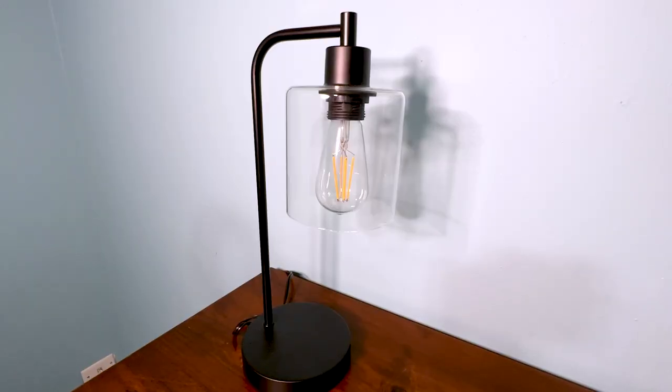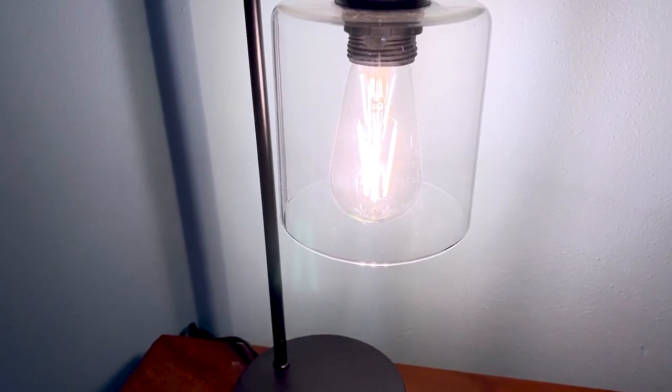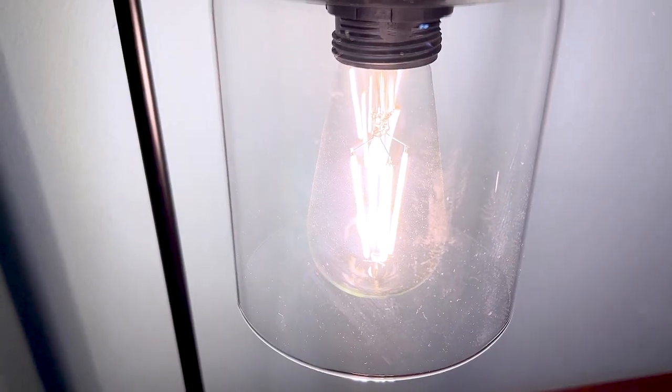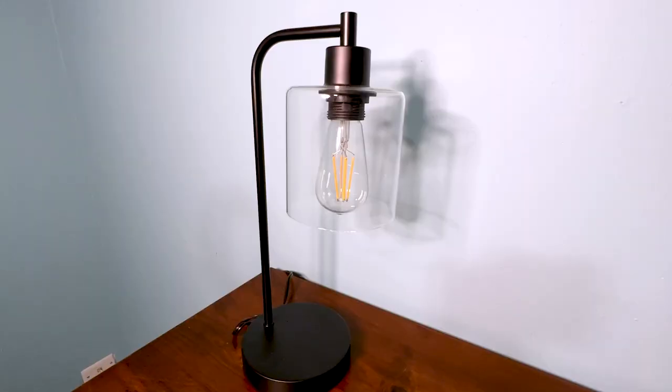It comes with everything you need to take it out of the box and set it up in your room. It includes two energy-saving LED Edison light bulbs, which is super nice. I could just take these lamps out of the box, get them set up, and we were ready to go. I didn't have to run to the store or do a separate order for light bulbs.